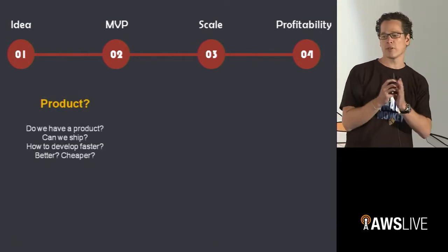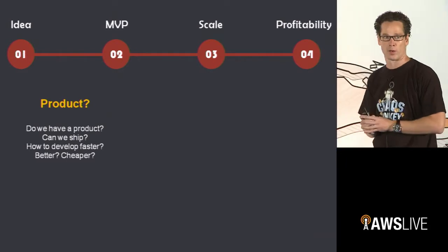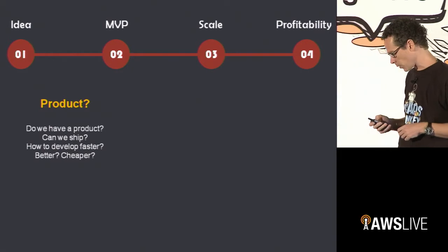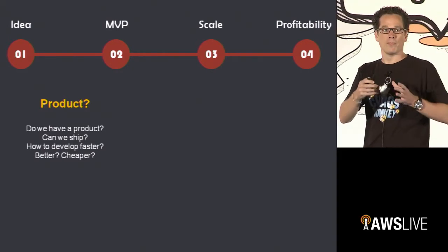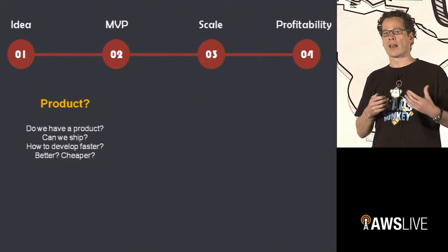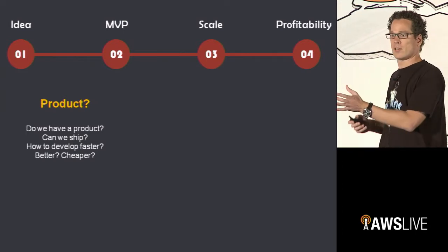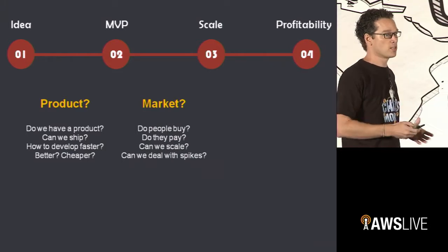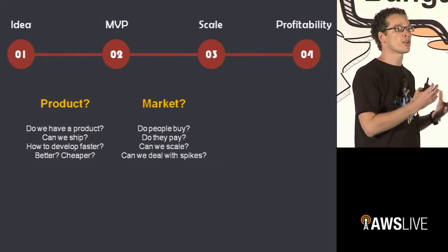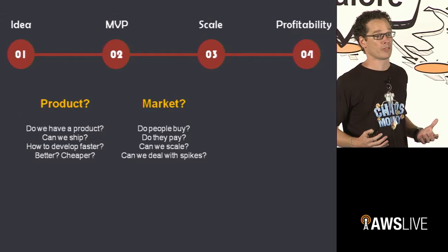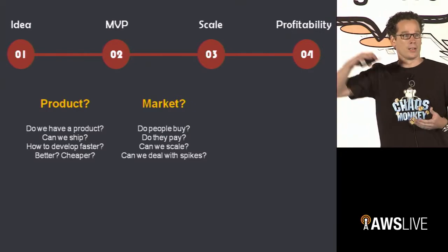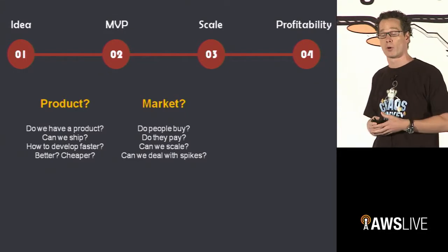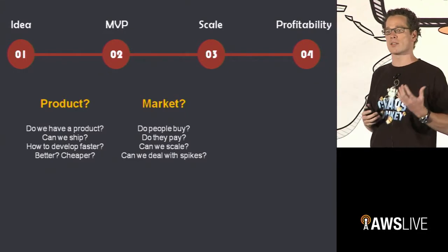At the first stage, it's really about product: do we have a product, can we ship it, can we develop it faster and cheaper? Once you've managed those challenges, the next stage is getting your MVP to market and scaling. Is there a market? Are customers coming? Are they buying from you? And if they all come, can you deal with the spiky traffic that Instagram dealt with? Those are very serious challenges.